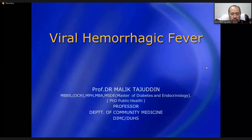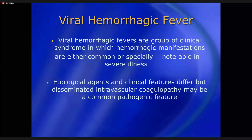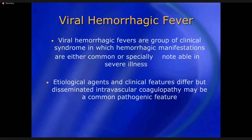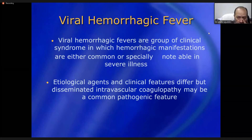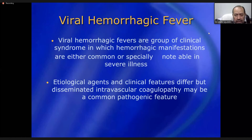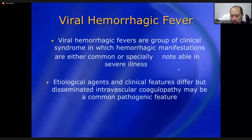Now, viral hemorrhagic fevers are a group of clinical syndromes in which hemorrhagic manifestation is common or especially notable. There are many different types of viral hemorrhagic fevers caused by different viruses from different species and families, but the common feature among all of them is this hemorrhagic manifestation. Etiological agents and clinical features differ slightly, but disseminated intravascular coagulopathy — DIC — is the common pathogenic feature.